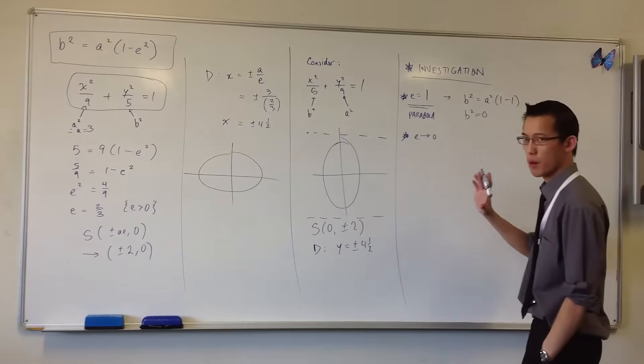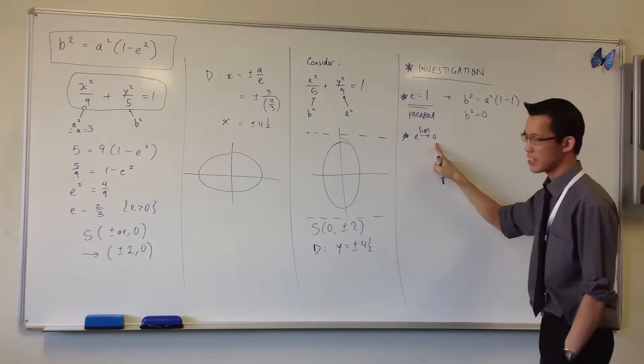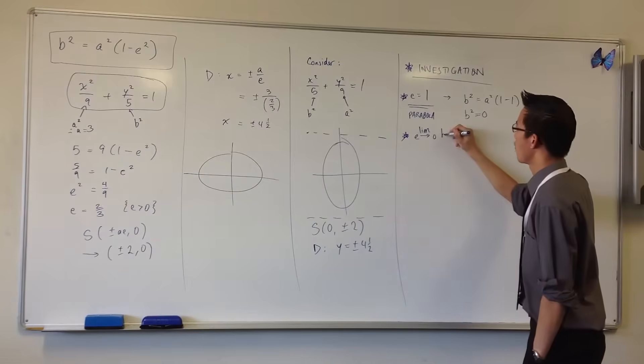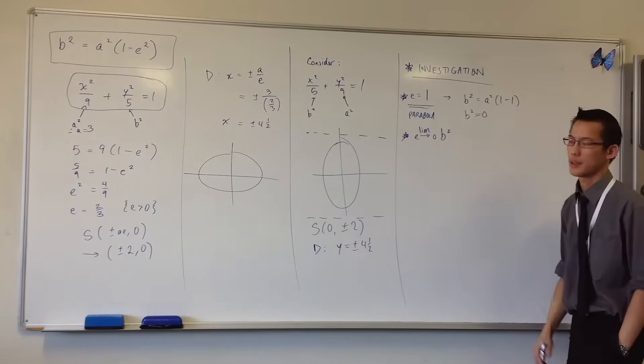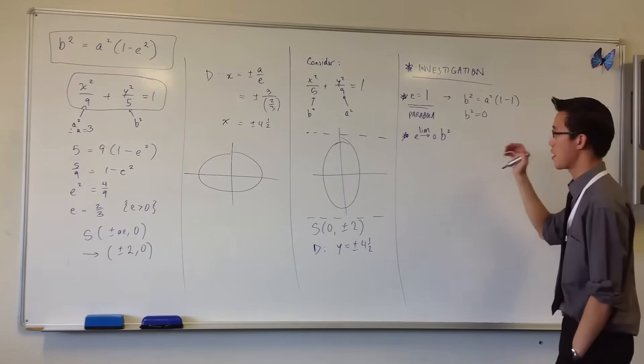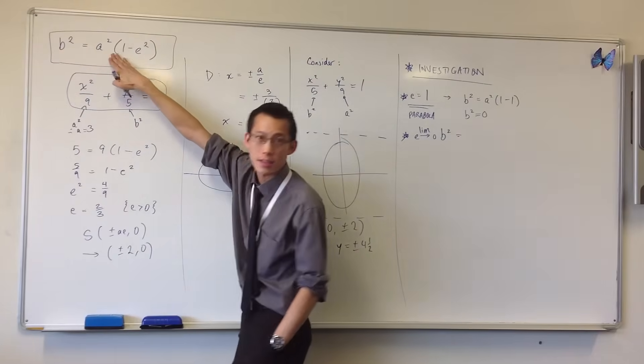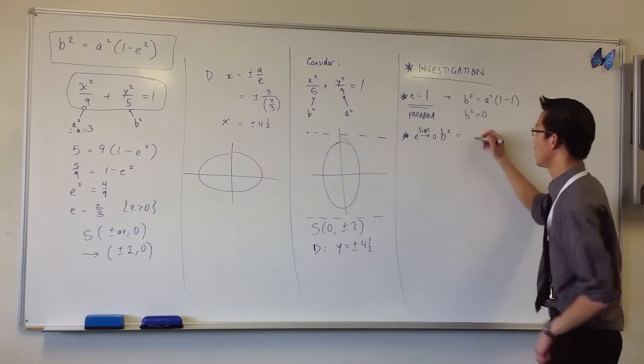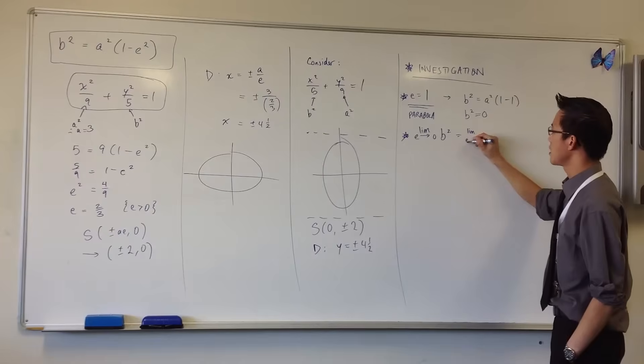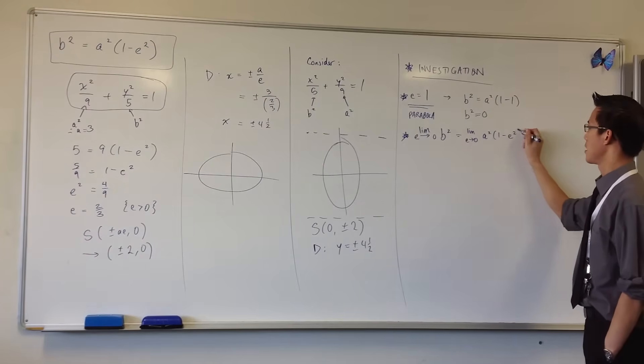Now we're going to write this out with some proper language. So I'm going to take the limit as e approaches zero of b². Now I want to try and examine, just like here, what happens to the semi-minor axis. Well, the limit of this as e approaches zero is going to be the limit of this as e approaches zero because they're the same. Right, so you've got the limit as e approaches zero of a²(1 minus e²).